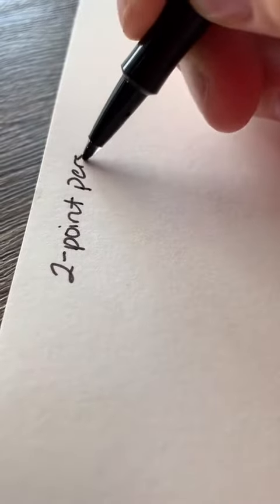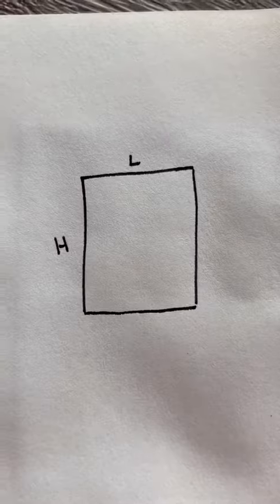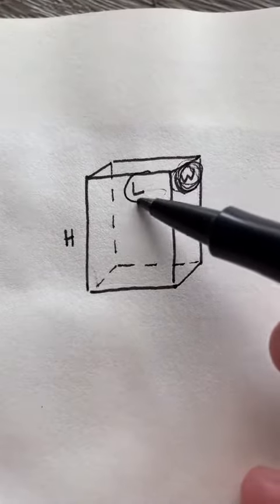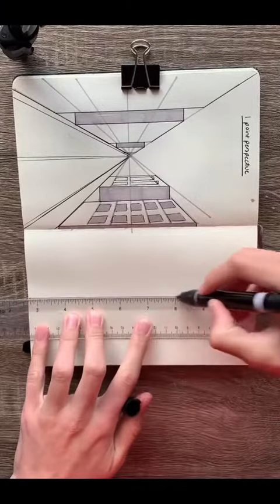Now, the rules of perspective are quite important to know if you're looking to draw realistically. Just for a little background, every 3D object has a height, length, and width, and with two-point perspective, both the width and the length are being distorted by our perspective.